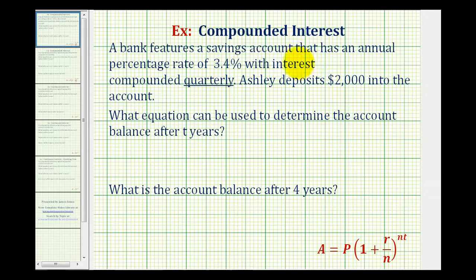A bank features a savings account that has an annual percentage rate of 3.4% with interest compounded quarterly. Ashley deposits $2,000 into the account. We first want to know what equation can be used to determine the account balance after two years, and then what the account balance would be after four years.